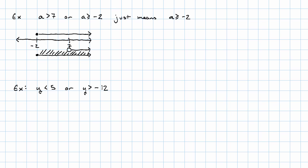There's one other thing that can happen with OR inequalities. Let's say we have the compound inequality Y is less than 5 or Y is greater than negative 12. Again, I want to graph each inequality separately. Y is less than 5 looks like this. Y is greater than negative 12 looks like this.